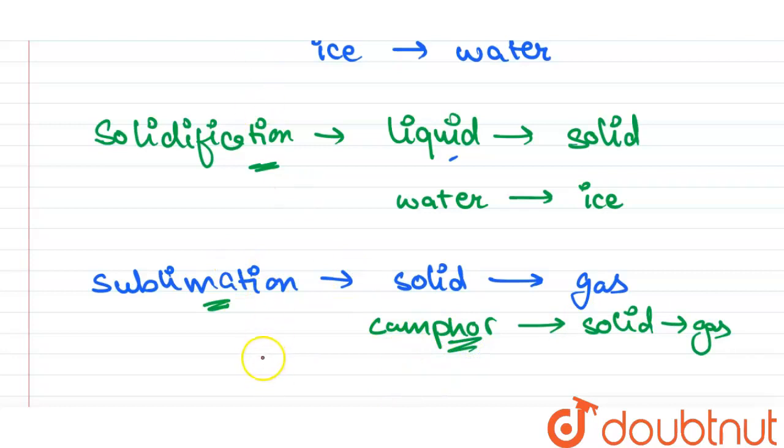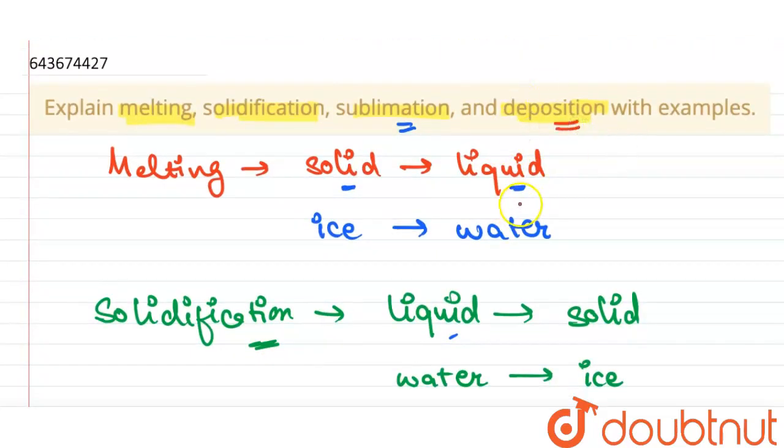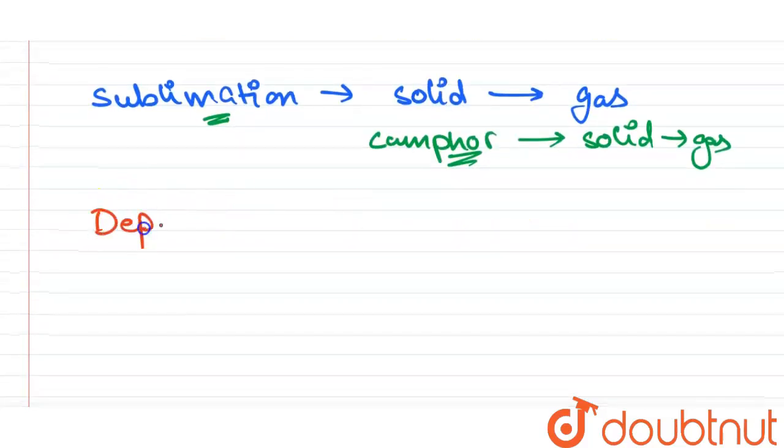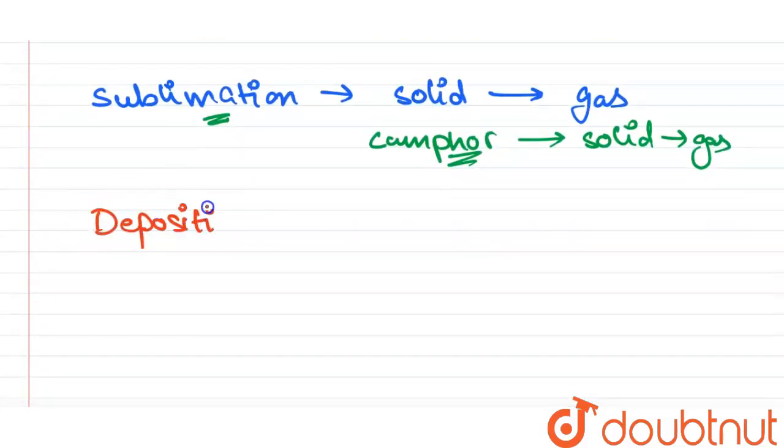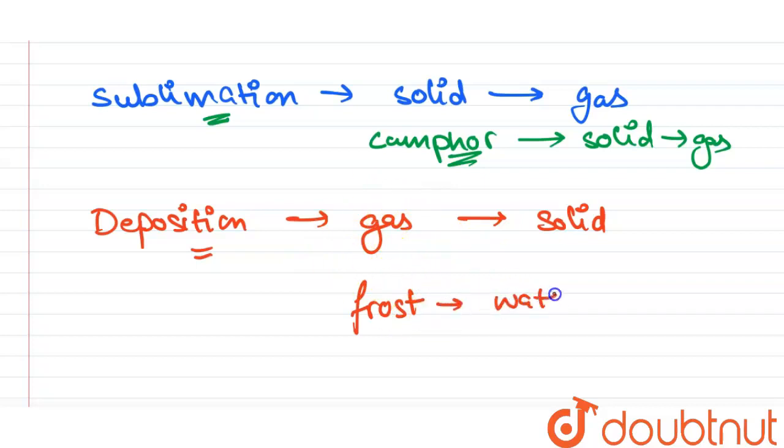Now another state we have: deposition. Deposition is the phase where gas is directly converted into solid. Example for deposition is frost—that is, when solid water vapor is directly converted to ice because temperature is so freezing cold that water vapor is directly converted into ice. This is called deposition.